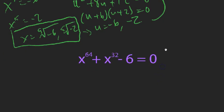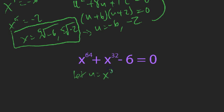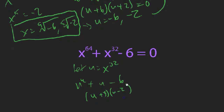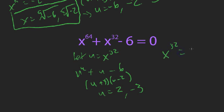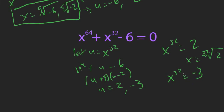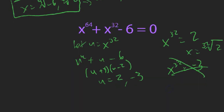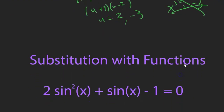Another substitution example: let u = x³². This gives u² + u - 6 = 0, which factors to (u + 3)(u - 2) = 0, so u = 2 and u = -3. Now x³² = 2 gives X = ±(32nd root of 2), but x³² = -3 has no solution because you can't raise a real number to an even power and get a negative. So the only solutions are plus or minus the 32nd root of 2.